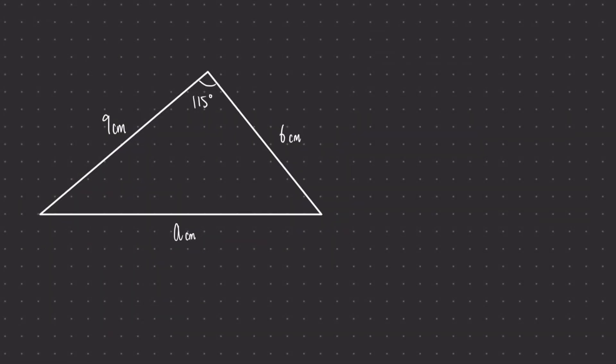Let's take a look at how to use the cosine rule in an example. This question is asking us to find a missing side of the triangle. The triangle is not right-angled, and I have this sandwich of a side length, an angle, and a second side length — this means I need to use the cosine rule. The first step is to label the triangle with A being the angle that is in focus, which is 115 degrees. The opposite side to that angle will be lowercase a. As for b and c, it doesn't matter which way round we label them, so I'm going to go b on the left and c on the right.